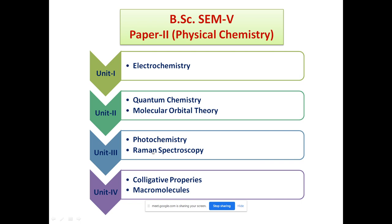Today I am going to discuss about Unit 3, that is photochemistry and Raman spectroscopy. These different units have already been covered in 11th-12th standard or in earlier BSc semesters — for example, electrochemistry was covered in SEM3 or 4, and this SEM5 content is an extension of that.